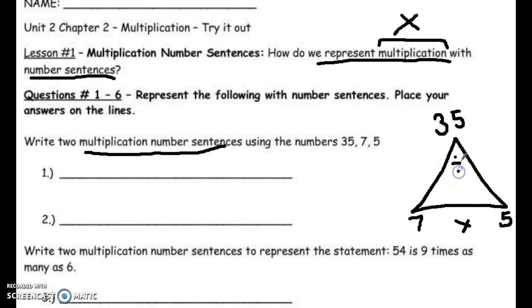You can also do division number sentences. If you start with the largest number and divide 35 by 7, you would get 5. Or divide 35 by 5, you would get 7. But remember, we only want multiplication number sentences.